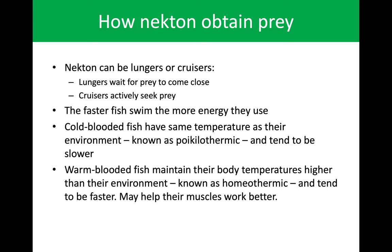This is when we start to consider warm-blooded versus cold-blooded fish. Many of the lungers are cold-blooded fish — they have the same temperature as the environment, tend to be very slow, and wait for prey to approach them. Warm-blooded fish are able to maintain their body temperatures, tend to be faster, and their muscles are more efficient. But with this they also require more food to keep this energy going. So cruisers have to hunt a lot more than lungers typically do.